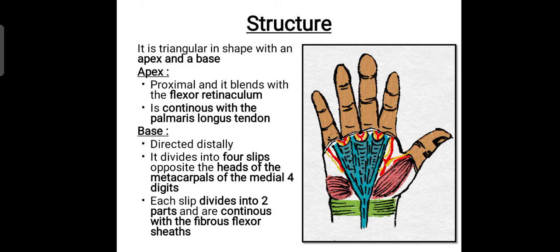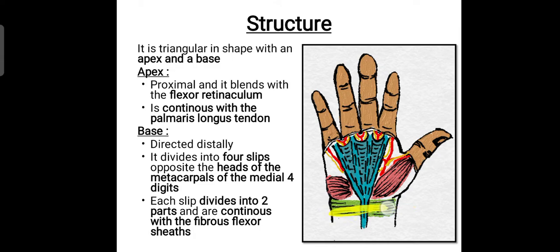Let's discuss the structure of the palmar aponeurosis. As you can see in the diagram, it is triangular in shape — a flattened triangular deep fascia modification. Being a triangle, it has an apex present proximally and a base placed distally. The apex is the proximal part of the palmar aponeurosis and it blends with the flexor retinaculum, represented here in green. The palmaris longus tendon passes superficial to the flexor retinaculum.